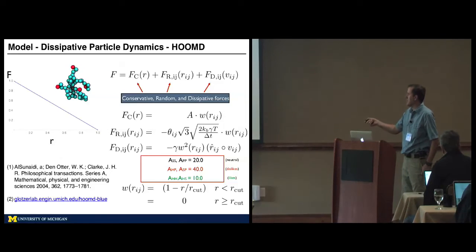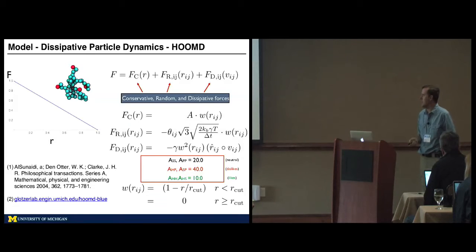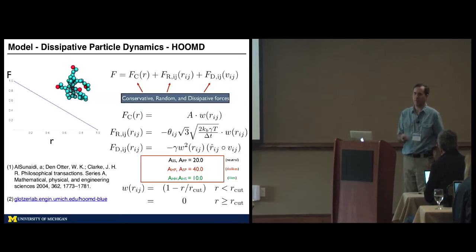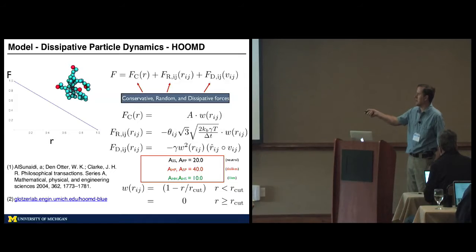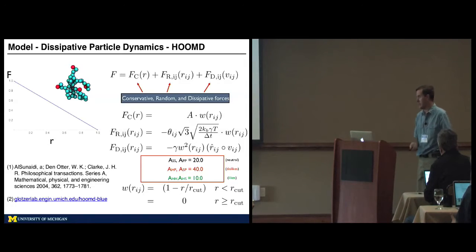We use standard dissipative particle dynamics. This is implemented in HOOMD, which is a simulation code that I lead the development of. It's a GPU-accelerated molecular dynamics and Monte Carlo simulation code driven by Python scripting. Coming up with models like this, you can just write Python code to generate these polymers, and then a few more lines of Python to activate this DPD force field, which is built into HOOMD, and then run your simulations.